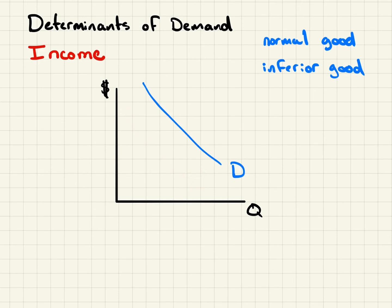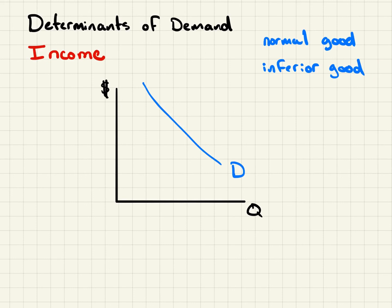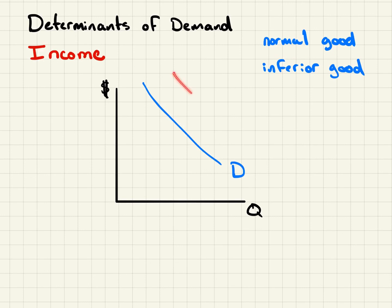Another example of an inferior good might be bus passes. As people get more and more income, they ride the bus less and less as they purchase their own car. So these are two ways that income can affect and determine demand — can shift the demand curve. They're both falling under the category of income as a determinant of demand, but depending on whether it's a normal good or an inferior good determines whether the curve shifts out or shifts in. In the next video, we'll talk about prices of related goods.